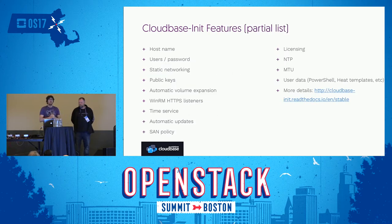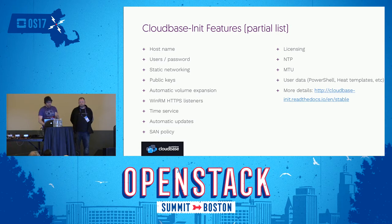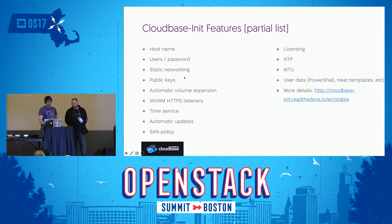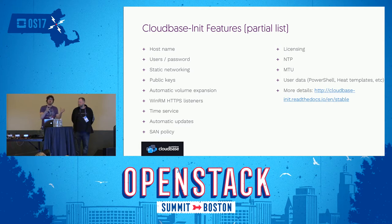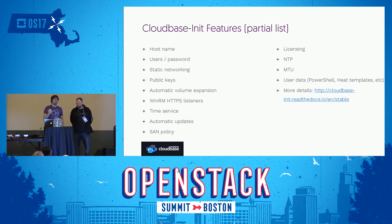Here is a very limited list of the things that CloudBase Init can do for you. A lot of those things are new from the Ocata lifecycle, extending into Pike. You can set hostname, create usernames and passwords, manage your admin password, set static networking even on Ironic, manage public keys, perform automatic volume expansion when you boot different flavors, configure HTTP listeners, configure the time service, handle automatic updates, SAM policy, and licensing. For example, you can move your VM from on-premises to cloud and get your licensing configured. You can also set NTP services, set the right MTU for Open vSwitch, and run every type of user data scripts.